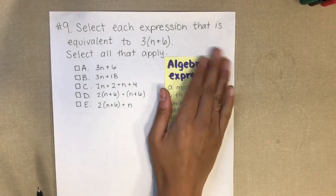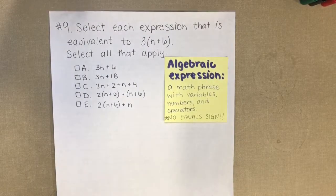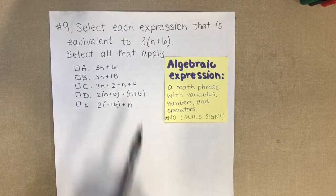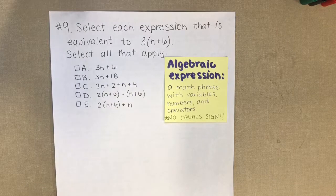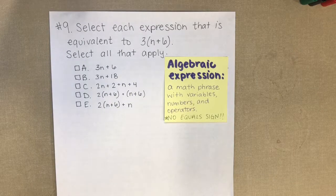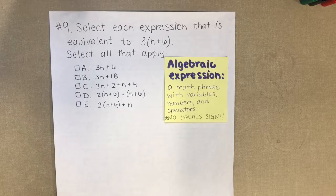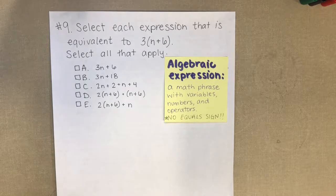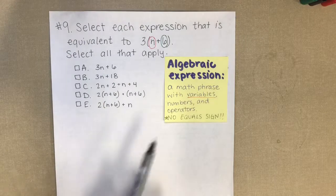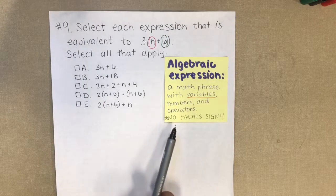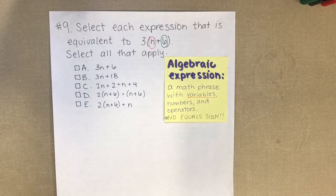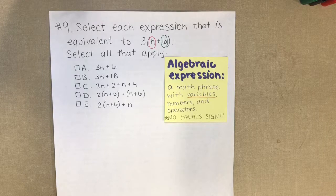Remember, an algebraic expression is a math phrase with variables — so letters like n — numbers, and operators. Operators are the things that tell you what to do in the problem: addition, subtraction, multiplication, division, or exponent. Remember that in an algebraic expression there is no equal sign. If there's an equal sign, that makes it an algebraic equation.